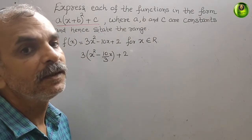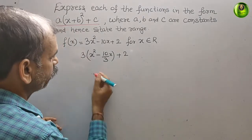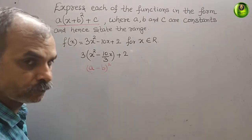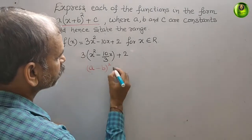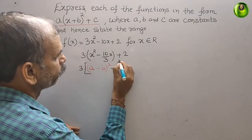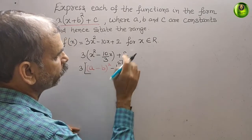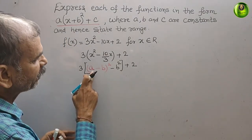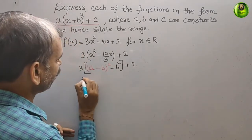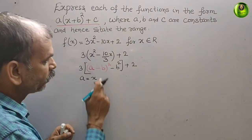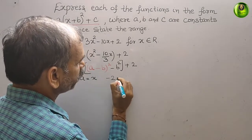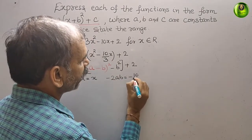Now we need to make it in the form (a - b)² - b². We write 3 times [(a - b)² - b²] + 2. Comparing terms, a² is x², therefore a is x. Now looking at the middle term: -2ab = -10/3 x.